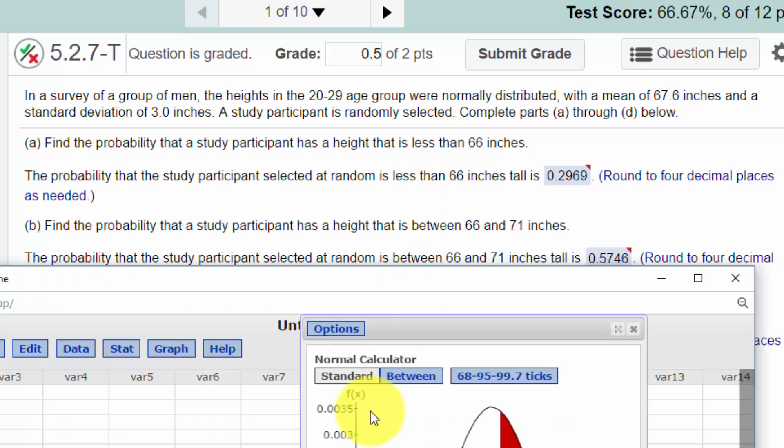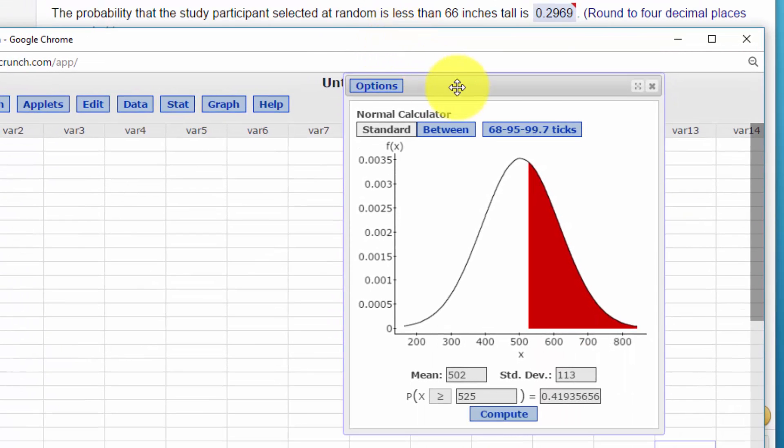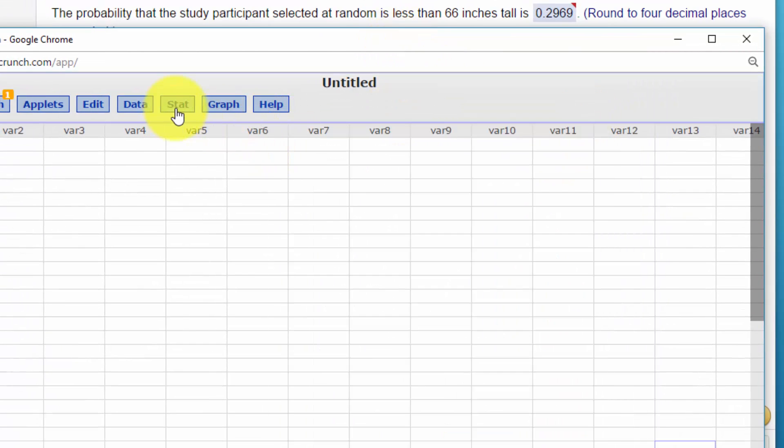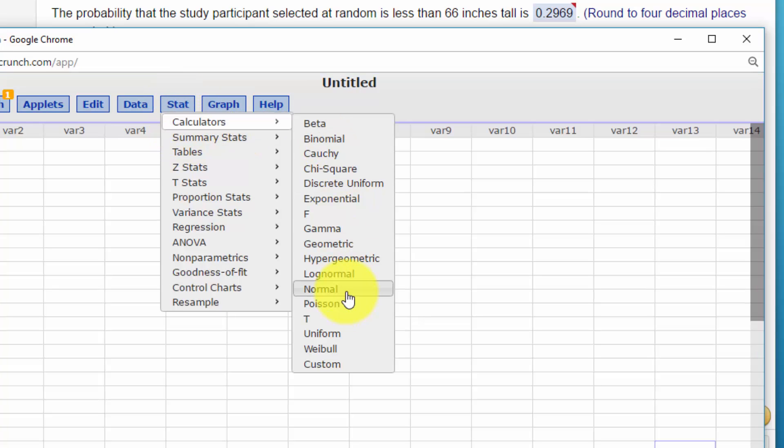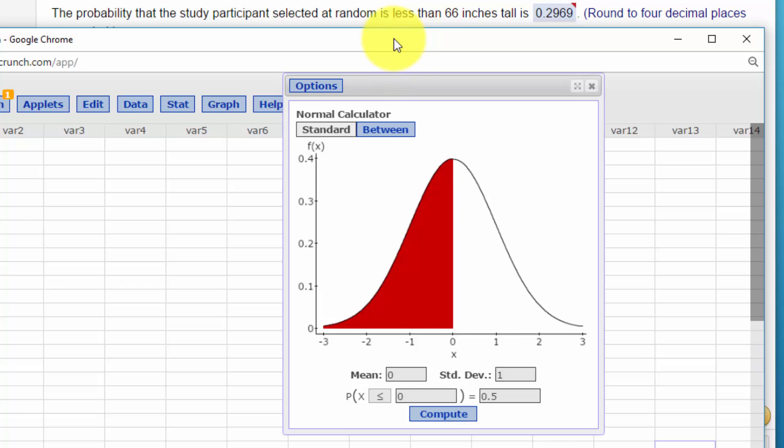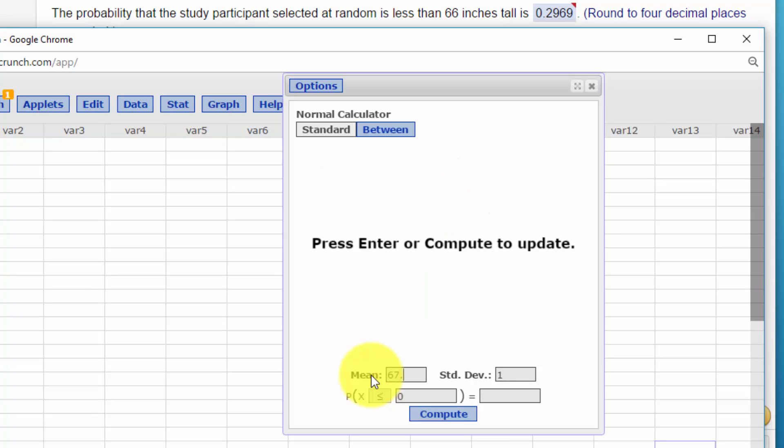Let's call up StatCrunch. I've already got it open here. Remember, we go to Stat, Calculators, Normal. Bring up our little dialog box, which draws the curve, which I highly recommend you always do. In this case, it comes up as the standard normal with the mean of 0 and 1, but we want a specific normal distribution. Mean of 67.6, standard deviation of 3, and the first part, find the probability that the participant has a height less than 66. So I'm going to put 66 in there.